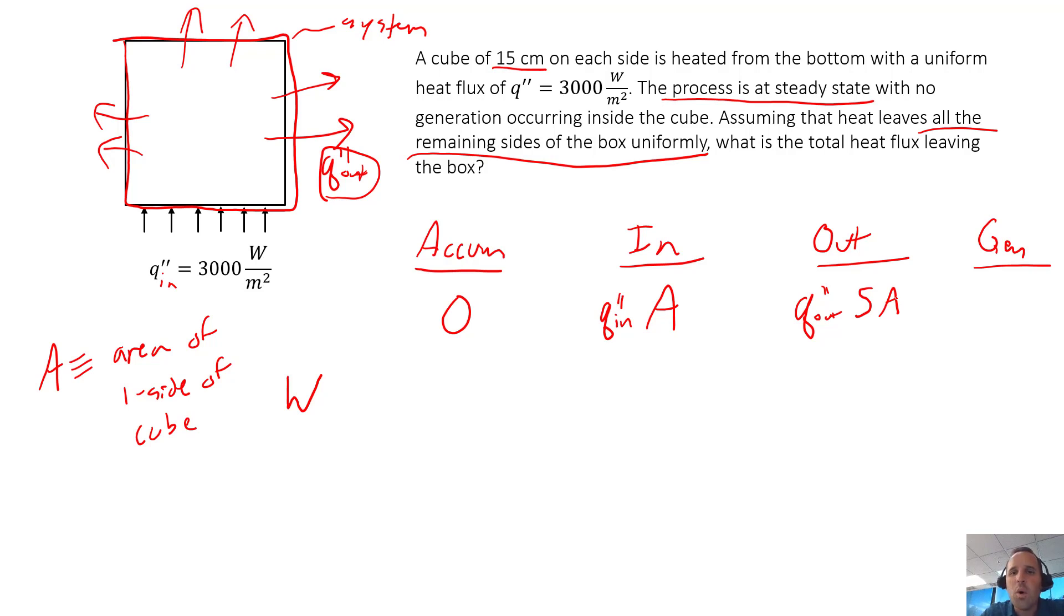In this particular problem we're not told anything about generation, so it's safe to assume that there's no generation. We would now take our defined terms from the balance and put those into equation form. We'd get accumulation equals in minus out plus generation. While we've defined this out term as a positive, we'll pick up this negative as we plug it in and subtract off the energy leaving our system.